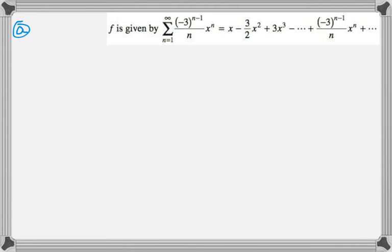In part a we are told we need to use the ratio test to find r, which is the radius of convergence. So that's going to involve a couple things. First, I'm going to say that a_n is just the nth term. So it's (-3)^(n-1) times x^n all over n.